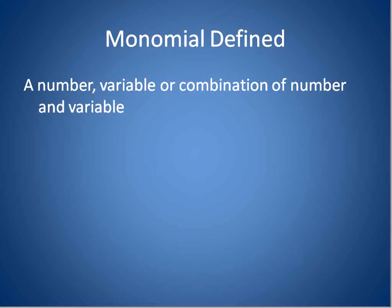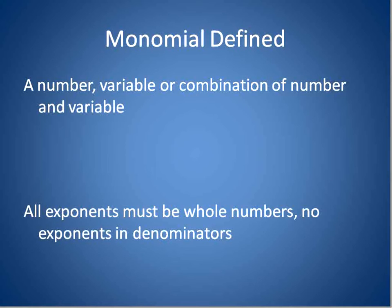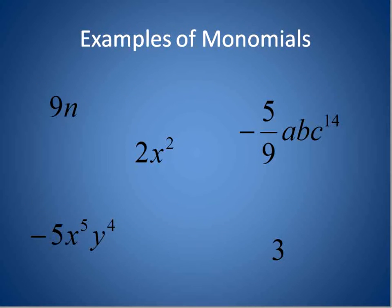A monomial is a number, variable, or combination of number and variable where all the exponents are whole numbers and no exponents in the denominator — no variables at all, actually, in the denominator. So let's take a look at some examples of what monomials actually are.